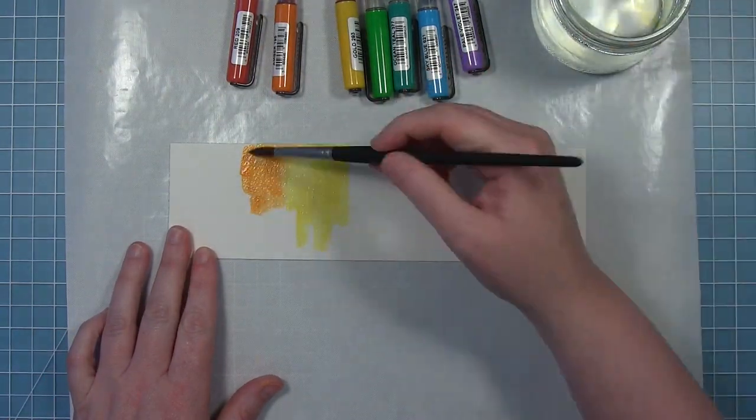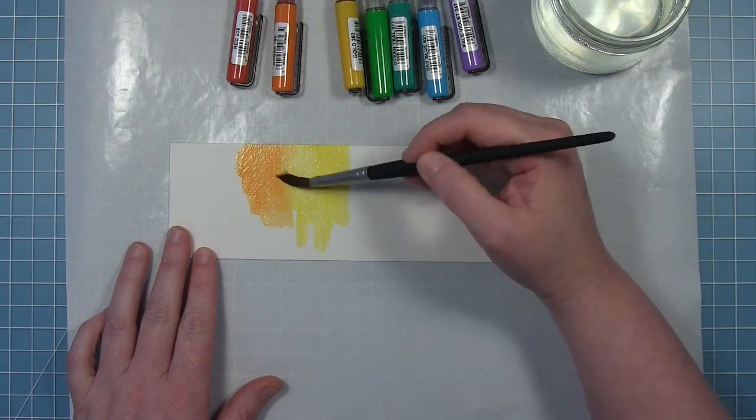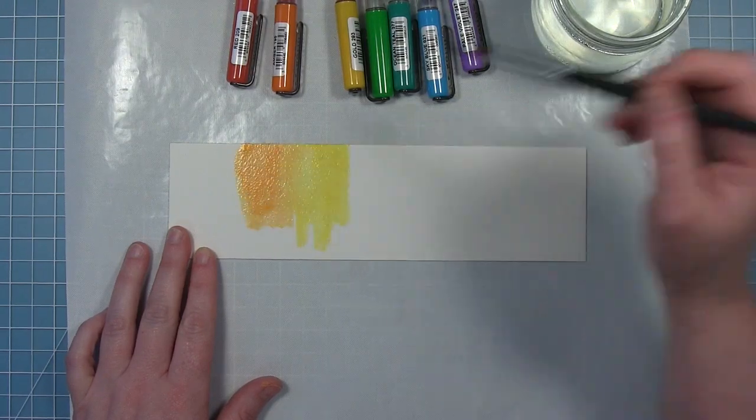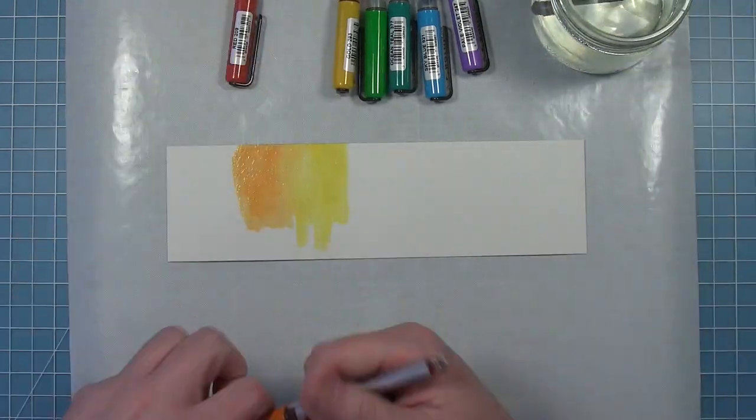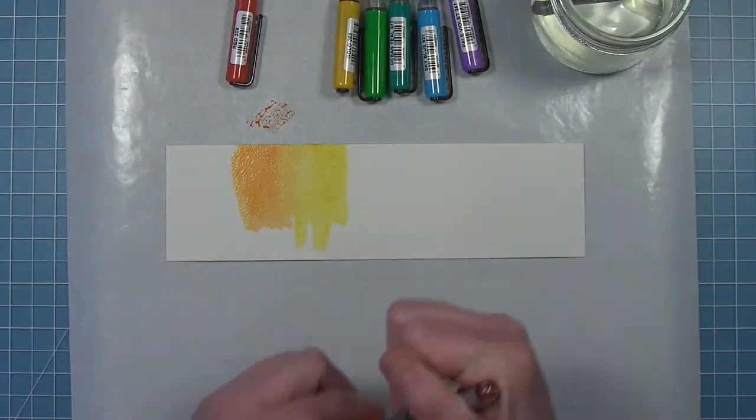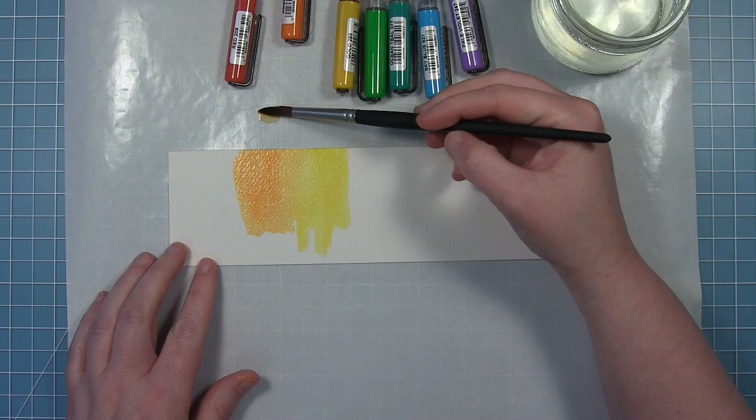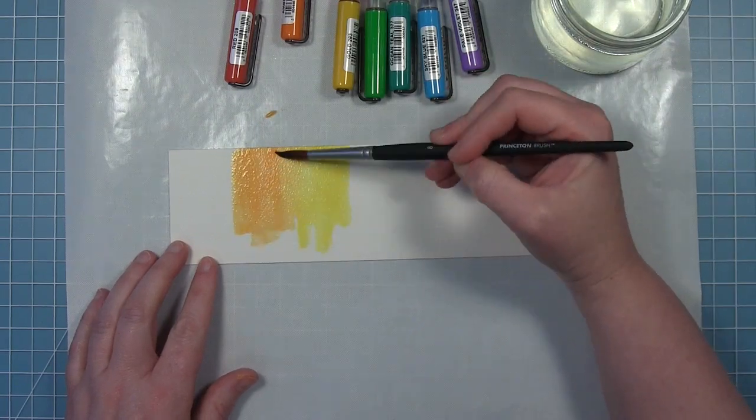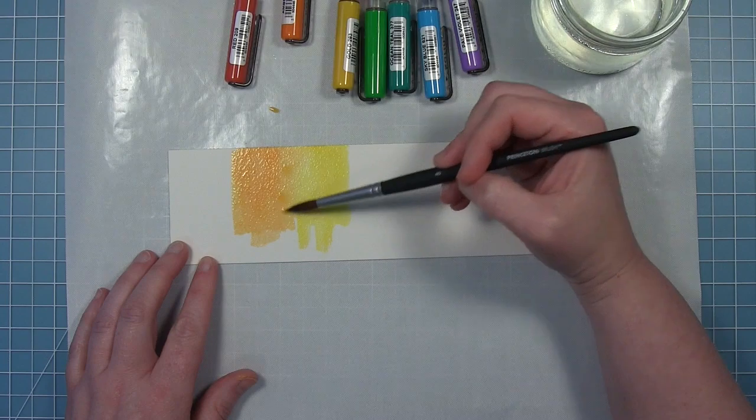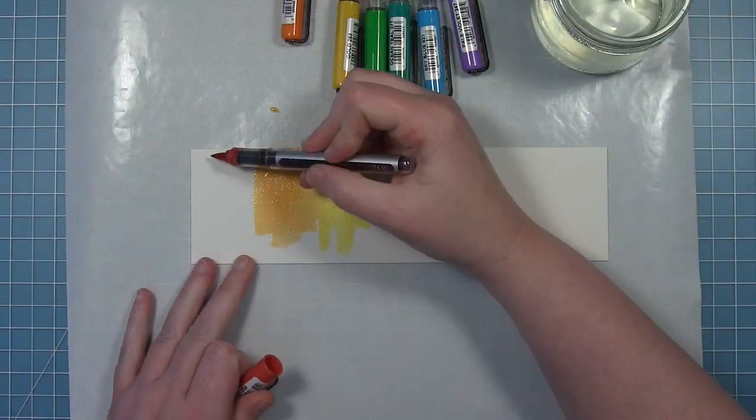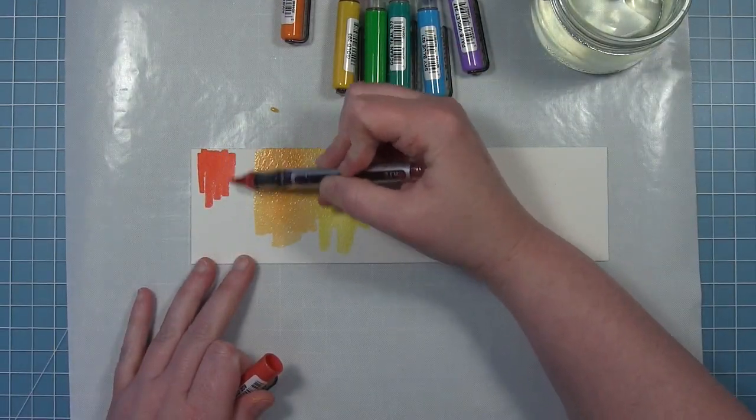And then I will just work my way down towards the end here. So I'm going in with the orange now, and you can see where those two colors hit, they start to blend together and you get that really cool watercolor look. And if you need to pick up a little bit more color, you can touch this pen to that wet watercolor and get a few dots in there, or you can scribble it on your craft sheet and add a little bit of water and just pick it up.